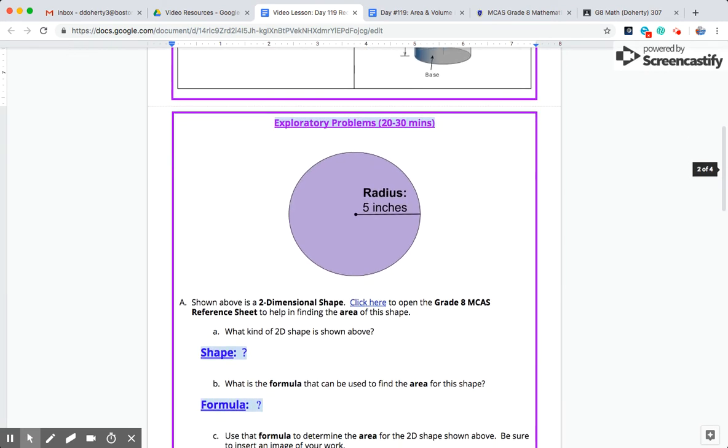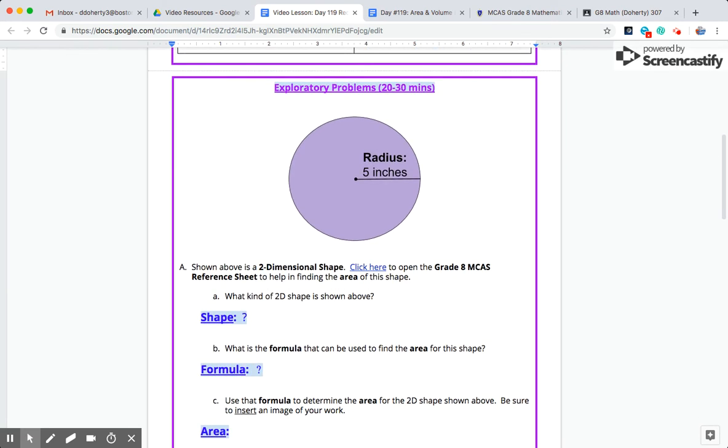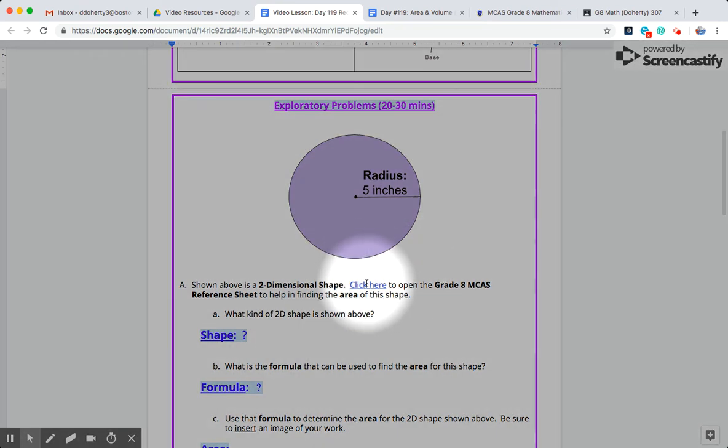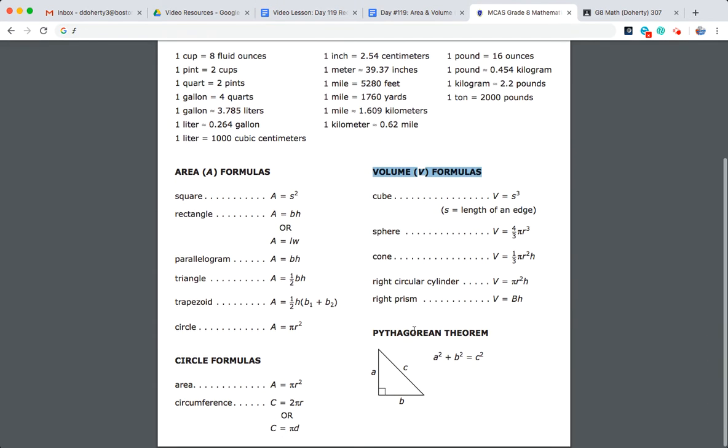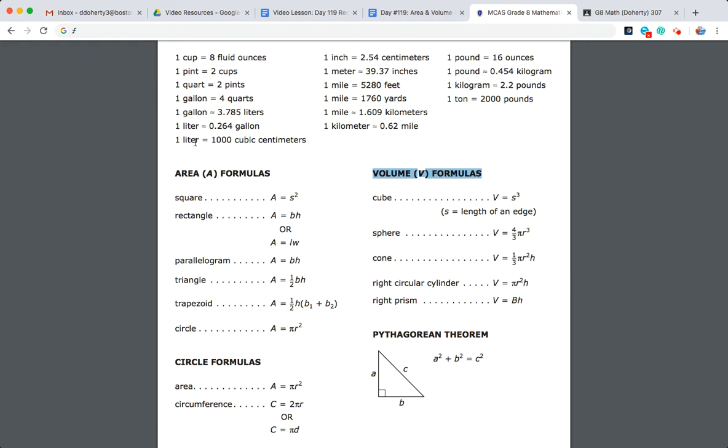So for review, to start in exploratory problems we're giving you shapes that you have seen in sixth grade and seventh grade already and worked on finding the area and the volume. The key today is we're going to be regularly utilizing our MCAS reference sheet because that helpfully provides the formulas for all the areas and volumes of any shape you'll work with in eighth grade. If you go ahead and click on this link right here, that should open up your MCAS reference sheet, and this reference sheet I'm looking at here is going to be key to finding the area of any of the figures we work with and finding the volume for any of the figures we work with.